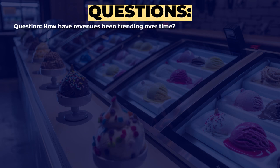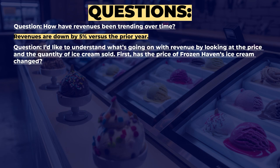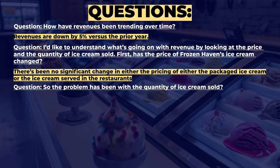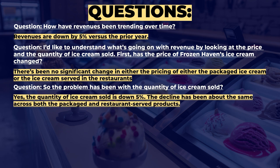How have revenues been trending over time? Revenues are down 5% versus the prior year. To understand revenue, we look at price and quantity of ice cream sold. Has the price of Frozenhaven's ice cream changed? There has been no significant change in pricing for either the packaged ice cream or the ice cream served in the restaurant. So the problem has been with quantity sold — yes, quantity is down 5%, with the decline about the same across both packaged and restaurant-served products.